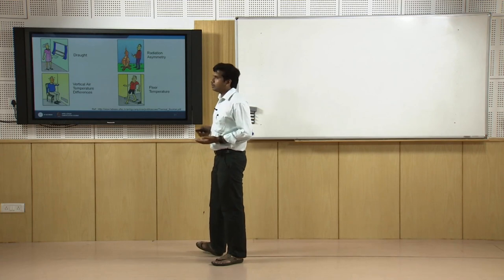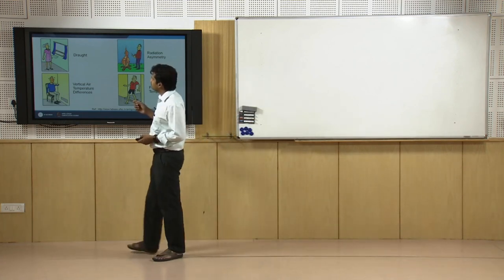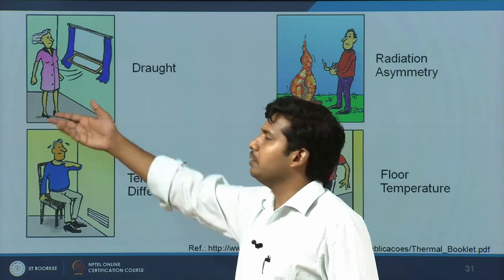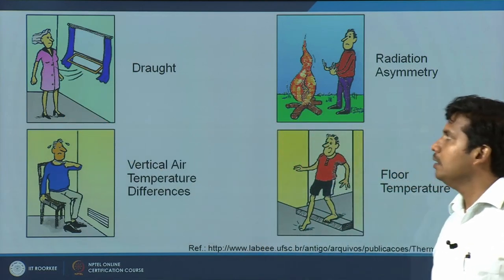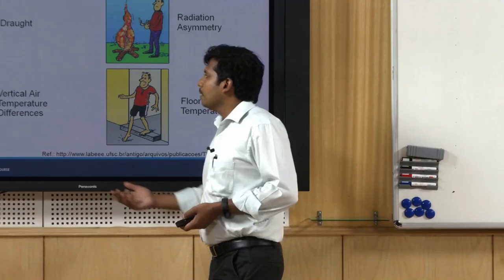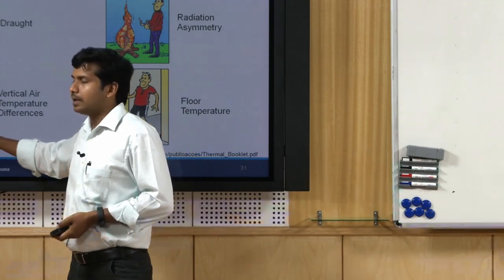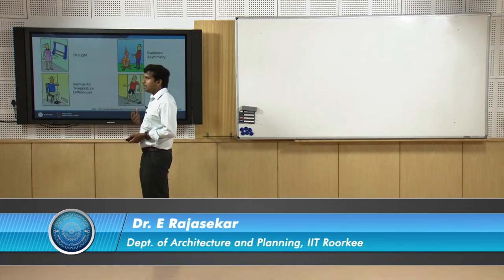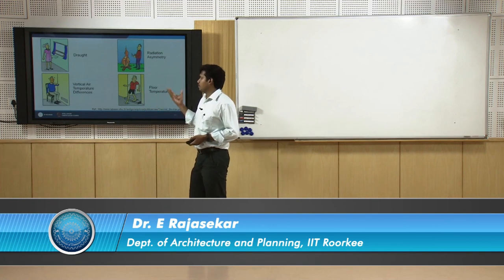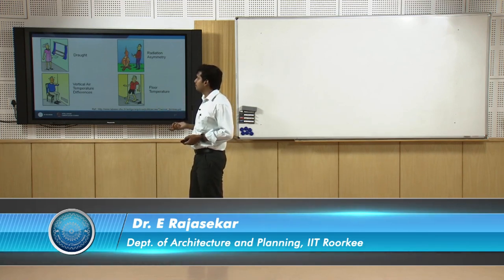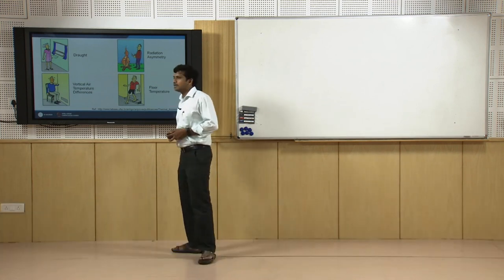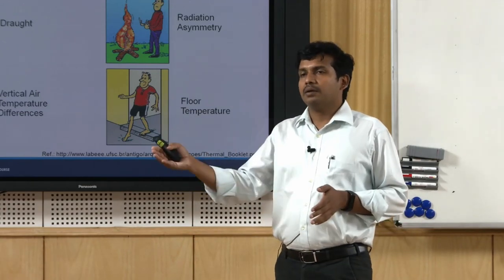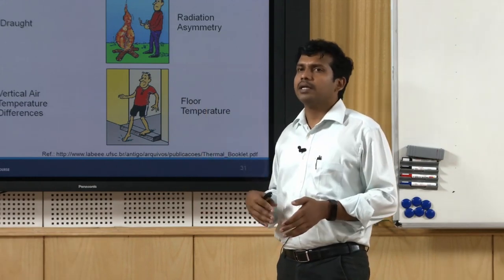Apart from the six main parameters, other important factors include draught — on a cold day a chill breeze through a window creates wind chill indoors. There is also vertical temperature difference: sitting next to a heater or air conditioner causes the temperature between foot and head level to vary considerably.